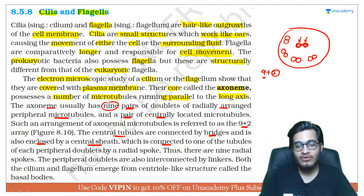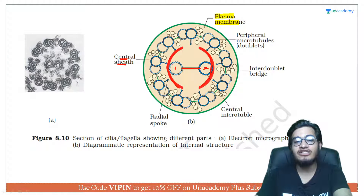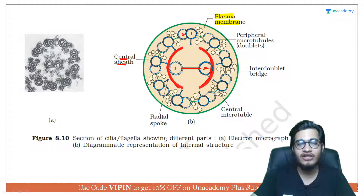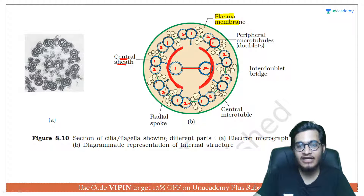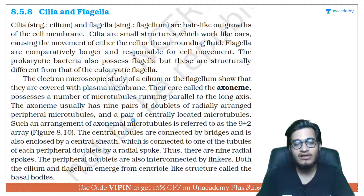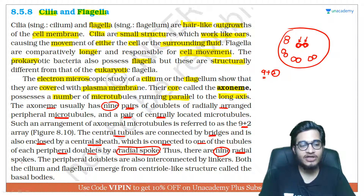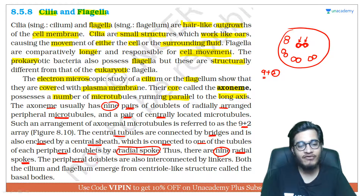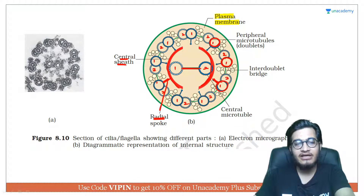The central sheath is connected to one of the tubules of each peripheral doublet by radial spokes. So the central sheath is arranged via radial spokes attached to one microtubule of each doublet. There are 9 doublets at the periphery — 1, 2, 1, 2... — and since each doublet connects to the central sheath by one spoke, there are 9 radial spokes in total. The peripheral doublets are also interconnected by linker proteins.